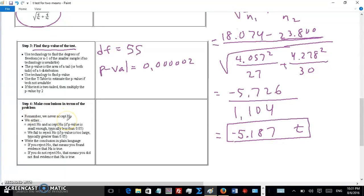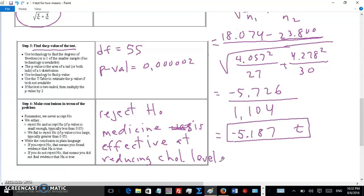Now step four: make a conclusion. P-value certainly is less than 0.05, so we reject the null hypothesis. So we can conclude that the medicine was effective. That it actually, the population—now if this medicine was put on the market, millions of people took this medicine—on average their cholesterol level would get reduced more than people who took a placebo. So medicine is effective at reducing cholesterol levels. Okay, that's it.